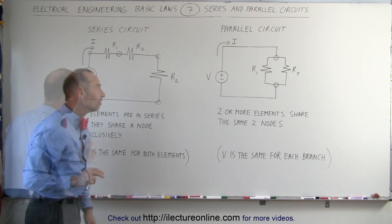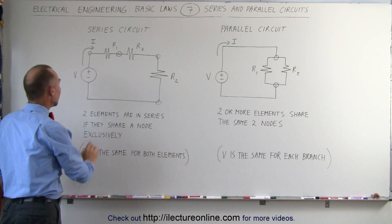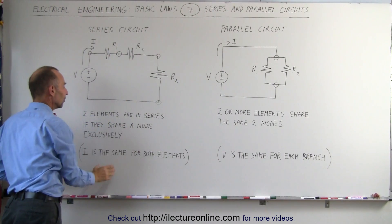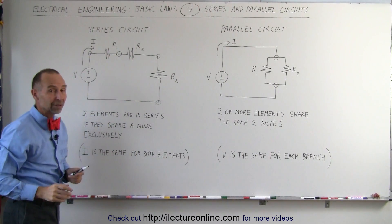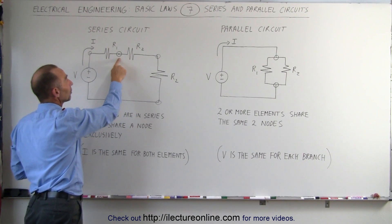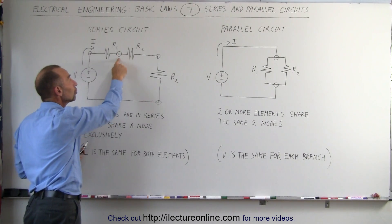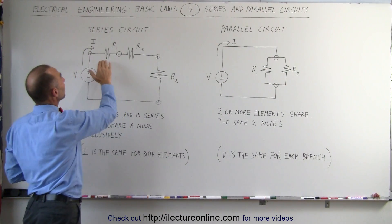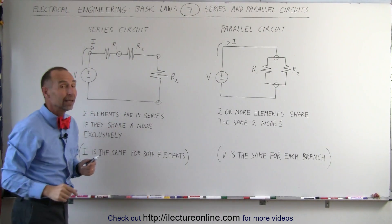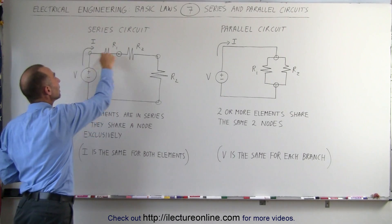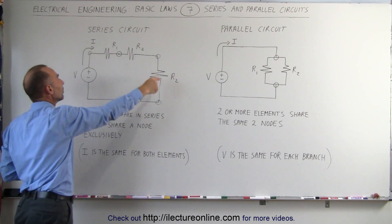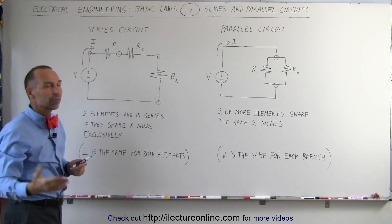Another way of looking at it is the following. If you have a series circuit, you can say that the current through the entire circuit is the same for every element. Since R1 and R2 are in series — sharing a single node exclusively, not shared by any other element — the current through R1 and R2 must be the same. Since all elements are in series, the current through all the elements, and therefore the entire circuit, must be the same everywhere.